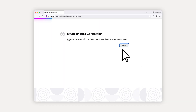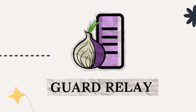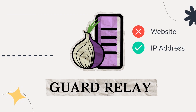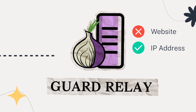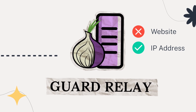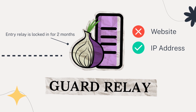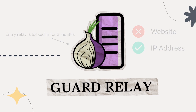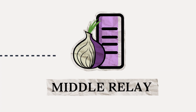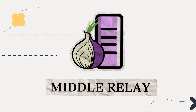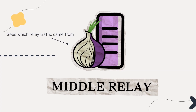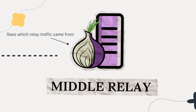The entry relay, often called the guard relay, is the first relay your Tor client connects to. It can see your IP address, but not what you're connecting to. Unlike other relays, the Tor client randomly selects an entry relay and sticks with it for two to three months to protect you from attacks.